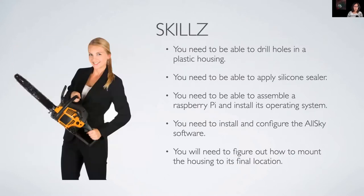What do you need to be able to do to make one of these things? You need to be able to drill some holes, apply silicone sealer, assemble a Raspberry Pi and install its operating system, and install and configure the AllSky software. The one thing I can't tell you exactly how to do is how you're going to mount the all-sky camera in its final location, because that depends on your circumstances.